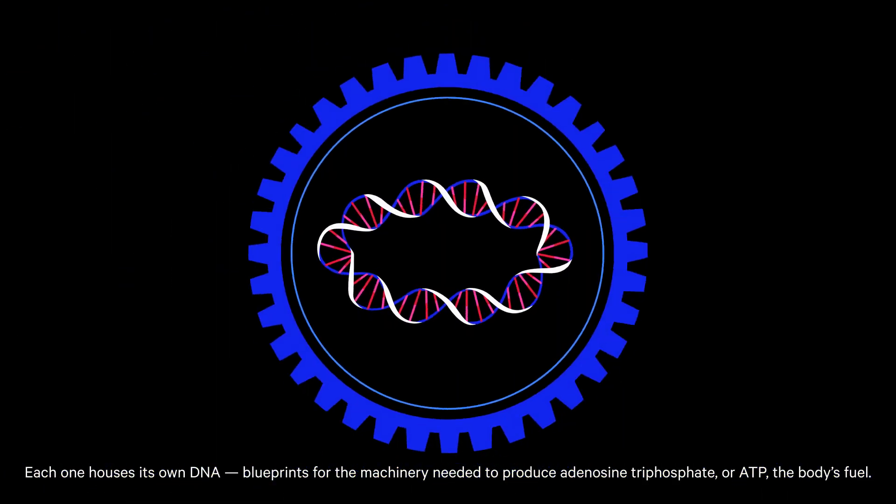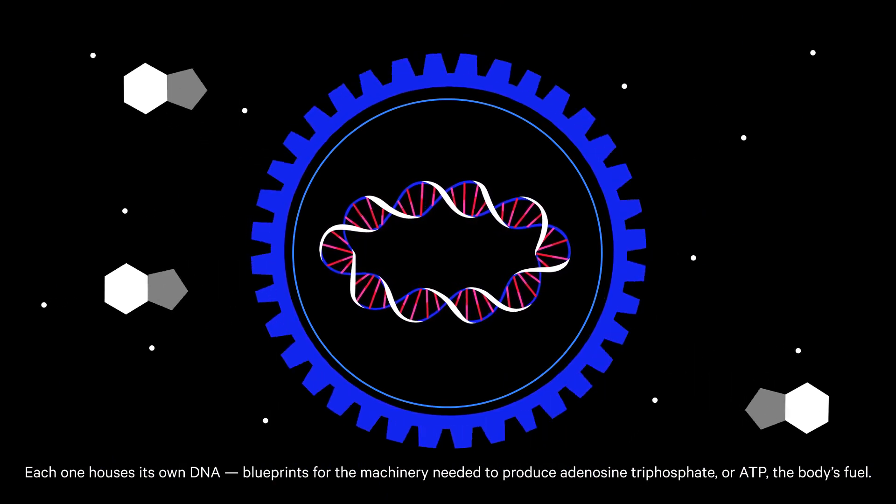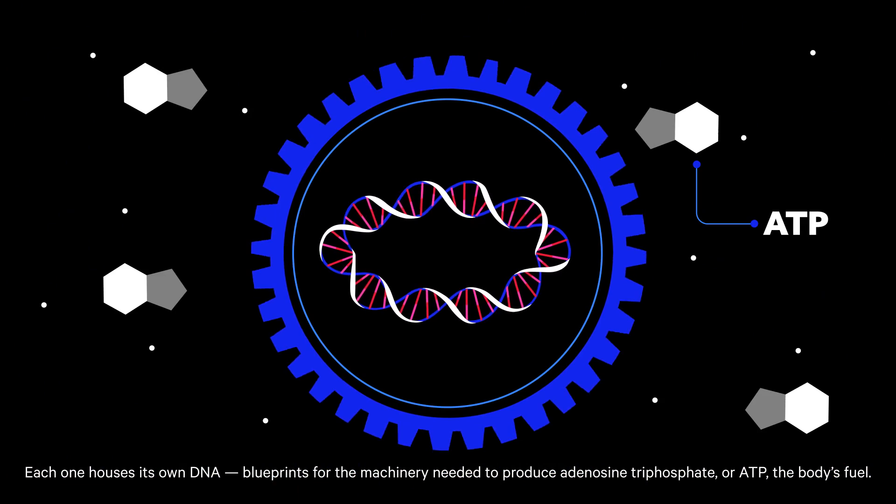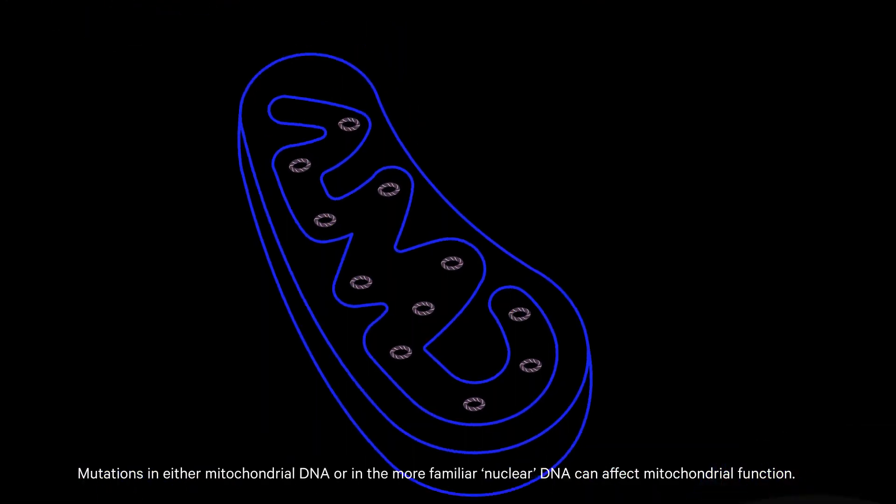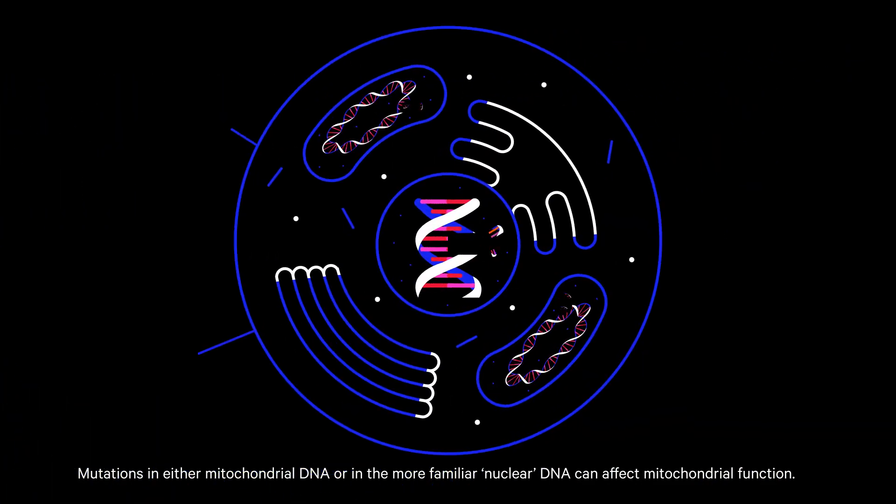Each one houses its own DNA, blueprints for the machinery needed to produce adenosine triphosphate, or ATP, the body's fuel. Mutations in either mitochondrial DNA or in the more familiar nuclear DNA can affect mitochondrial function.